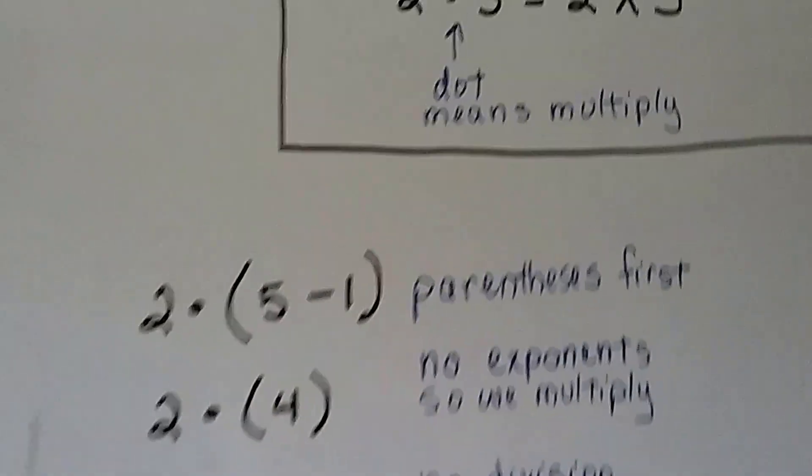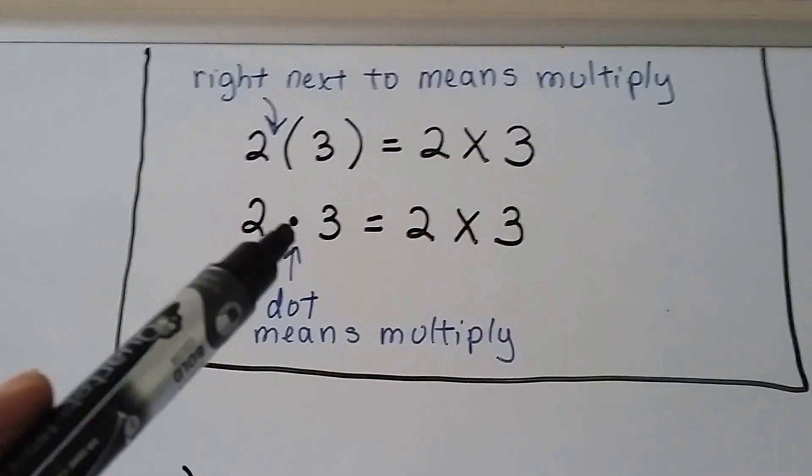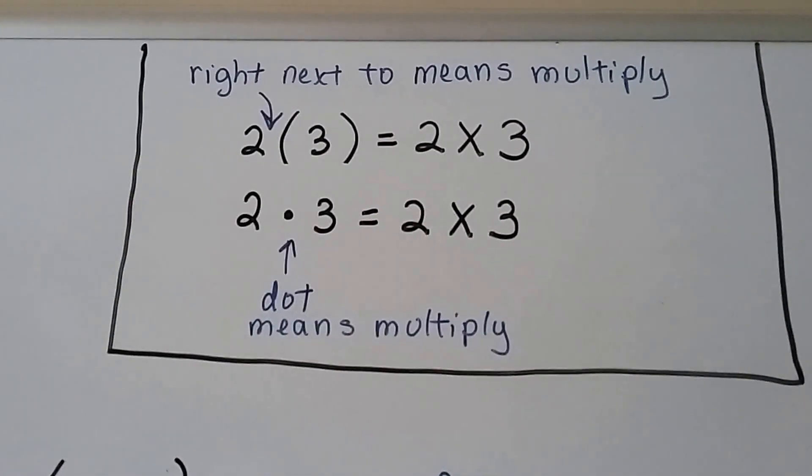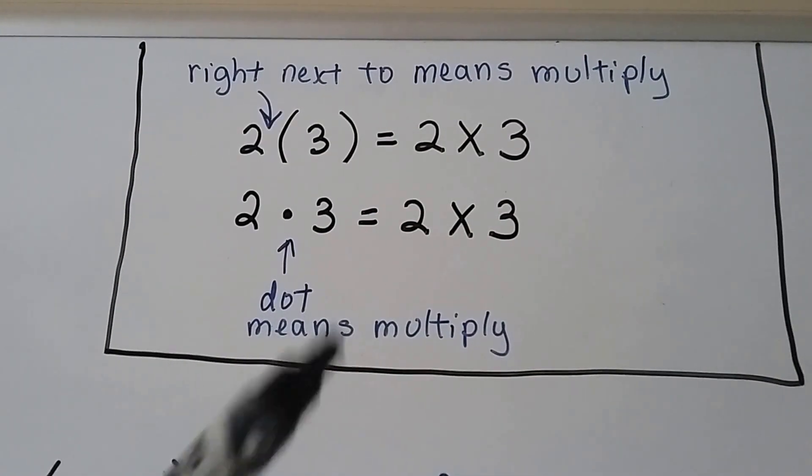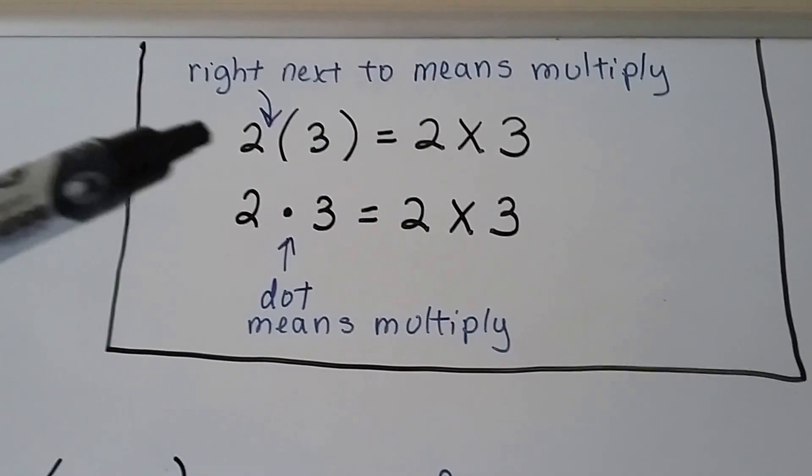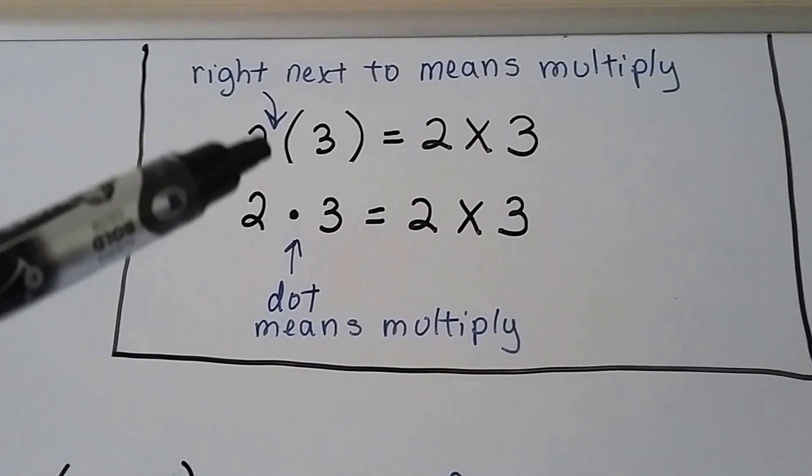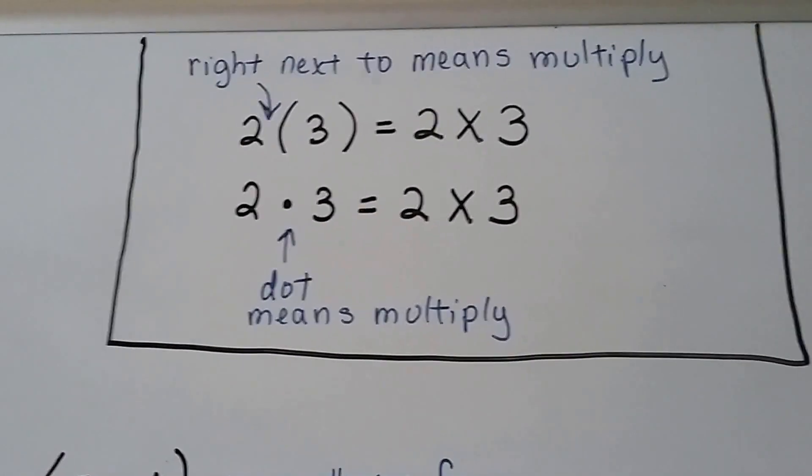So I want to show you something before we begin. It would be better if you use a dot to mean multiply or put your number right next to parentheses, like the 7th and 8th graders do. Little baby 3rd graders use an x. You just want to make sure there's no operation sign in here like a plus or a minus or a division sign. It's got to be right up next to the parentheses.